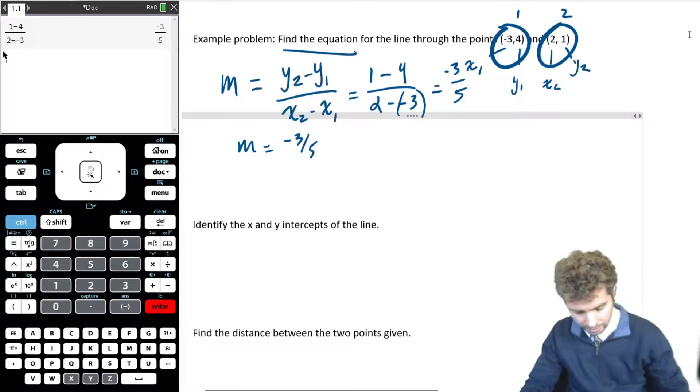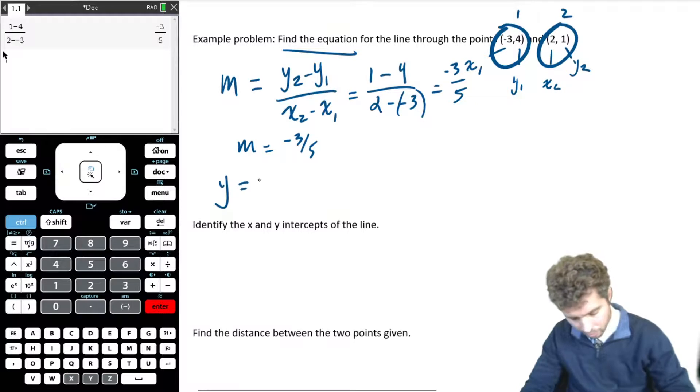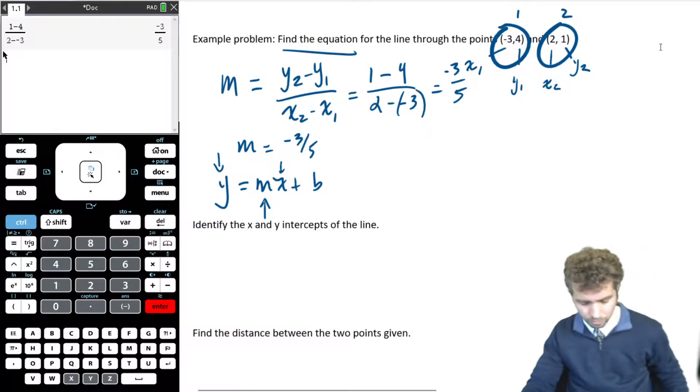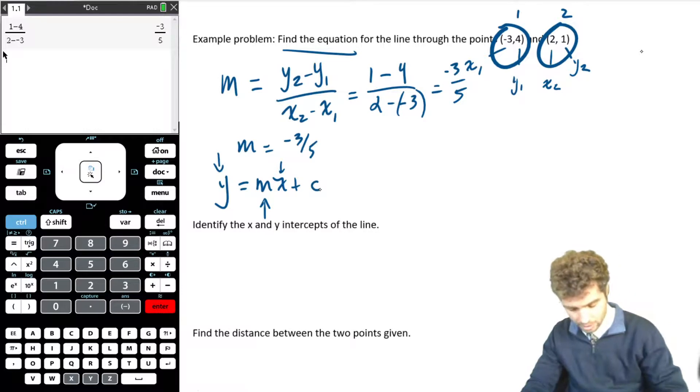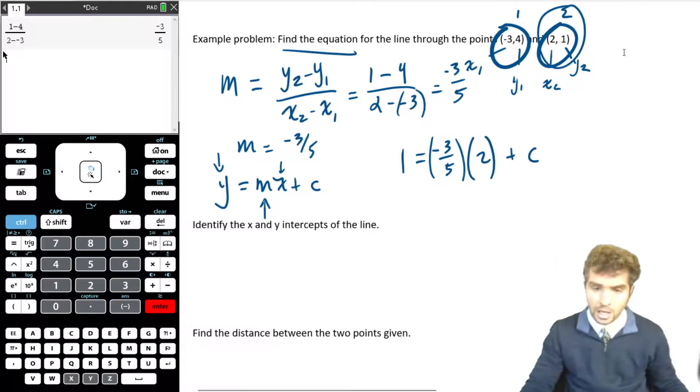Now what I need to do is I need to take that and plug it into my slope intercept form, y equals, or gradient intercept form, y equals mx plus b. Okay, so I know what m is, and I also have some y's and some x's, right? So I can pick either point 1 or point 2 and use that to solve for b or c, whichever letter we like. All right, so it's going to be, instead of the slope, I'm going to put negative 3 fifths. Okay, and that's going to be equal to, well, let's use point 2. So I'm going to say 1 equals negative 3 fifths, I'm going to put that in brackets, times 2 plus c. And we don't know what our c value is, and that's what we want to find.